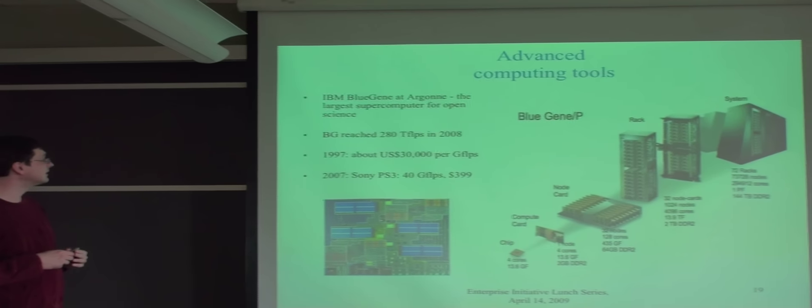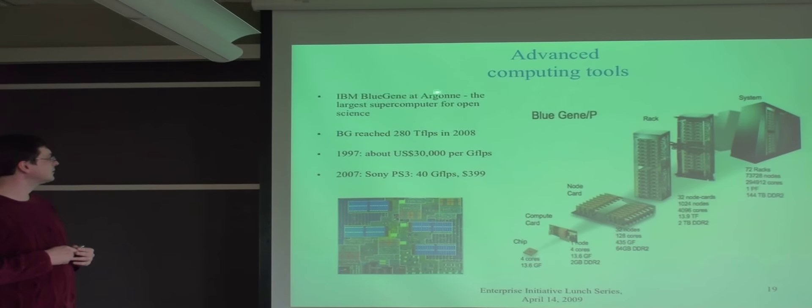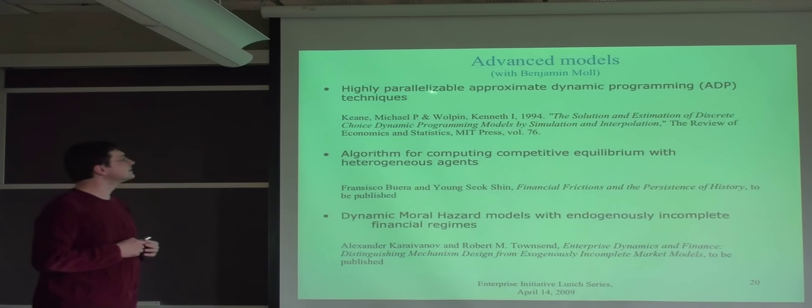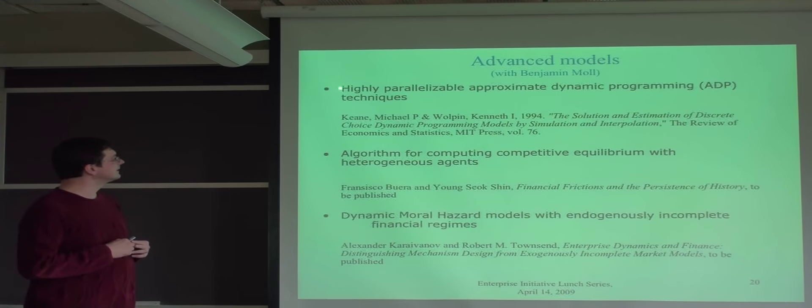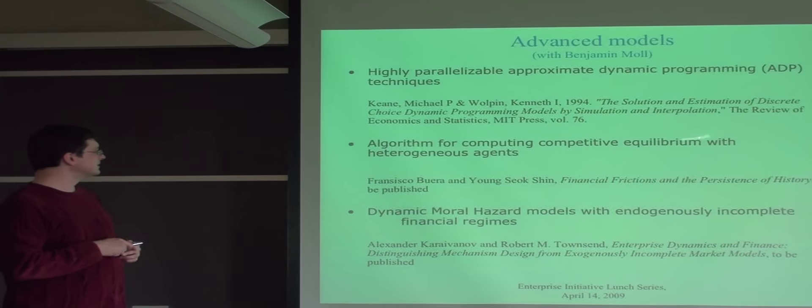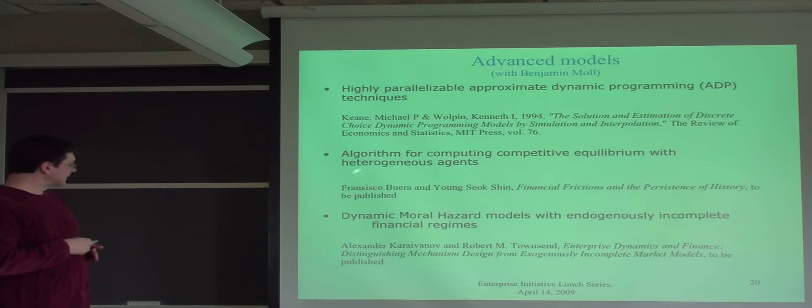Here, just the next stage of what we are doing right now, is trying to use more advanced computing tools, especially with new internet algorithms. What we're trying to do next is kind of this more advanced model, which will combine highly parallelized approximate dynamic programming problems. That's the approach that I really like. And then this recent algorithm for computing heterogeneous agents, which was originally put in place by Francisco Buera and the Shin. And we combine that, this branch of research coming from Professor Townsend's lotteries approach to moral hazard, solving moral hazard problems.